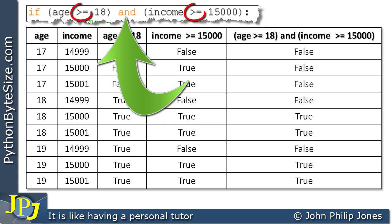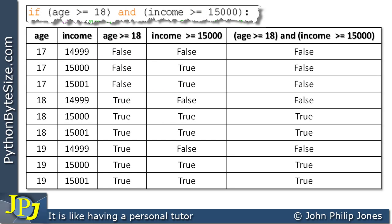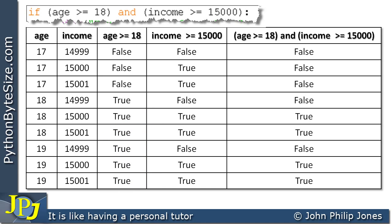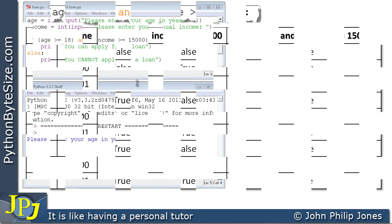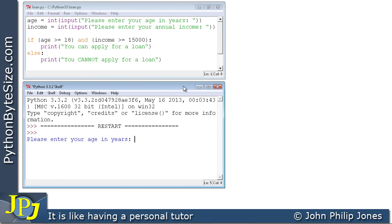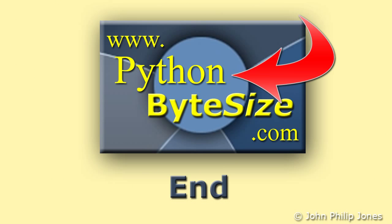The AND operator together with these relational operators are some of the ways we make decisions in computer programs. To fully test the program, you should enter each pair in turn and confirm the program responds as expected. I'm going to run just this one: entering age 18 and £15,001. Here I enter 18, then 15,001, hit return, and the program responds with 'you can apply for a loan'. I recommend you have a go at writing the program and entering each pair in turn.